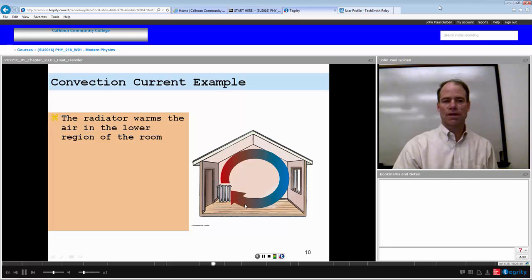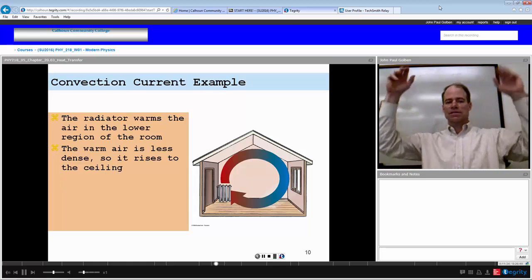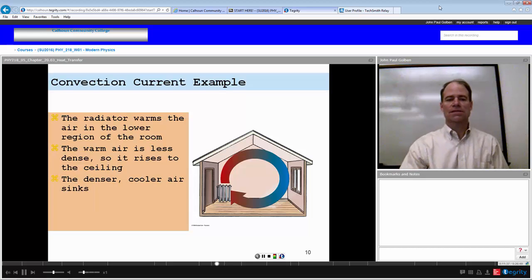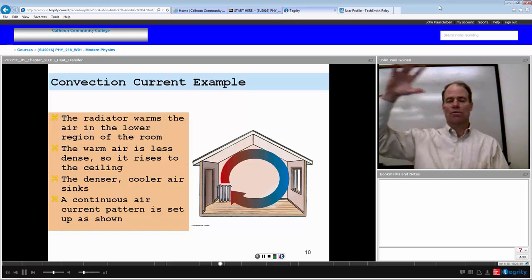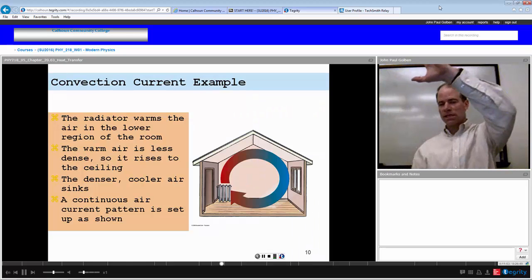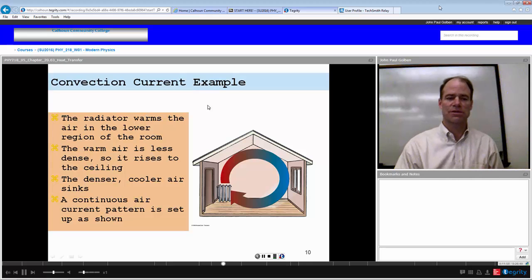Here's an example of convection. We have a radiator in a room. It warms the air in the lower region of this room. Warm air rises because it's lighter, less dense. So the less dense air rises to the ceiling. As it rises, the denser cooler air sinks and kind of moves in to where the other air was rising. And this causes a pattern where the air is exchanging through the room. So you have air rising, the cold air sinking, and causing a continuous pattern. And that would be a convection example.